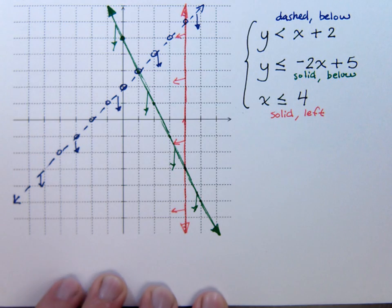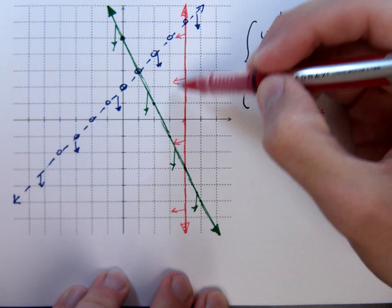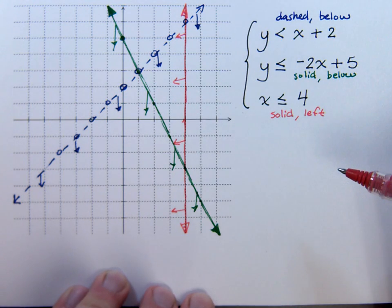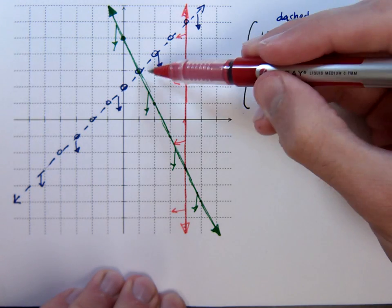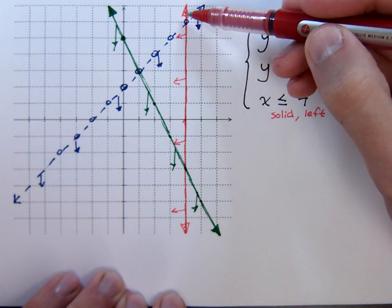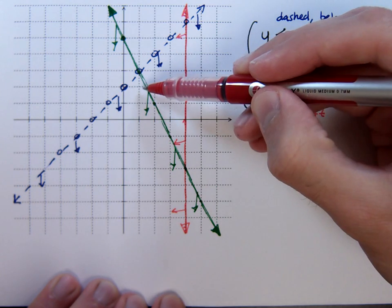Now this is where a lot of students can get into trouble if they're not paying attention. A lot of students would like to say, oh, let's just shade in this little triangle. But that's not what it's saying. We have to find out the common area that we're shading. If I shade in this triangle, it would satisfy the red inequality and the blue one, but not the green one. The green one is shading below.